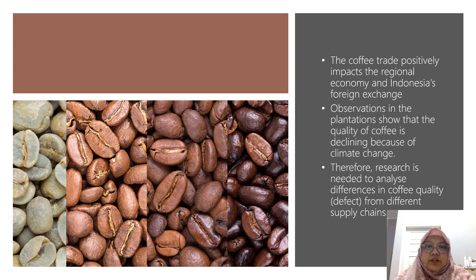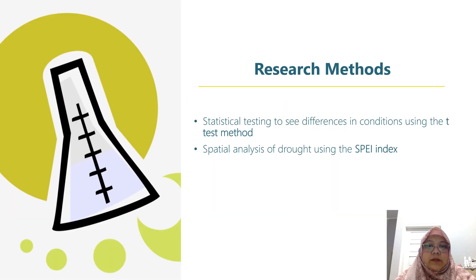Observations in the plantation show that the quality of the coffee is declining because of climate change. Therefore, research is needed to analyze differences in coffee quality or defects from different supply chains. The research method uses statistical testing to see differences in condition using the t-test method, and spatial analysis of drought using the SPEI index.